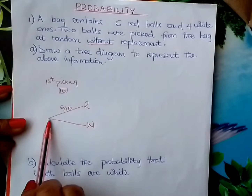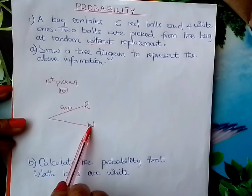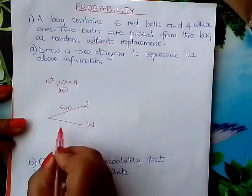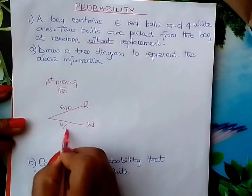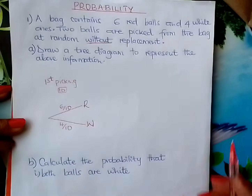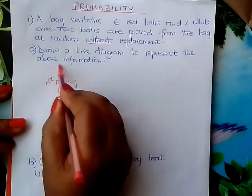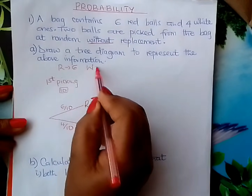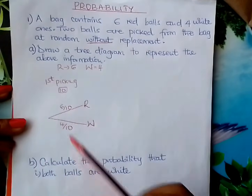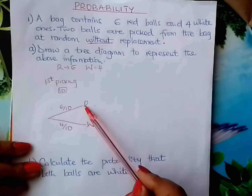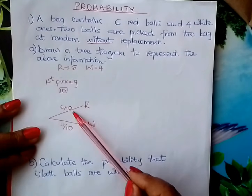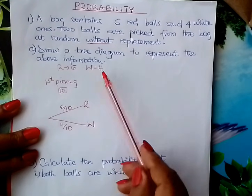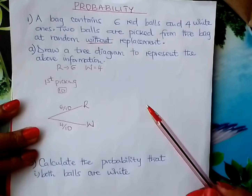What is the probability of picking a white ball? The number of white balls is 4, so it is 4 out of 10. The red ones are 6 and the white balls are 4 in the beginning, so in total they are 10. The probability of picking a white ball is 4 out of 10.